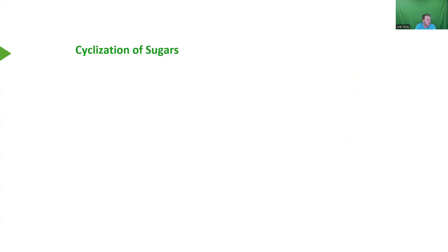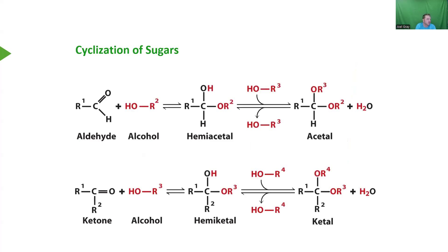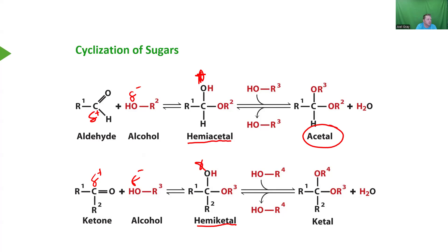The cyclization of sugars is an important part of this class. In order for a sugar to cyclize, you need a carbonyl carbon with a partial positive charge. Aldehydes and ketones both have that partial positive charge, which reacts with the partial negative charge on an alcohol. An aldehyde can react with an alcohol to form a hemiacetal; a ketone can react with an alcohol to form a hemiketal. That hemiacetal can then react with another alcohol to form an acetal. The hemiacetal or hemiketal is what forms during the cyclization of a sugar.